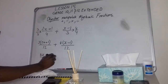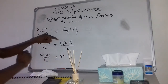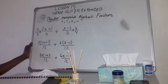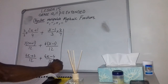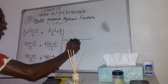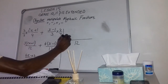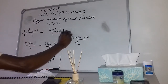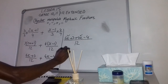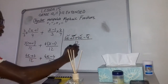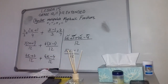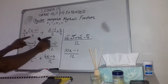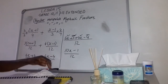So we have (6x + 3) over 12, plus 4 times x gives 4x and 4 times negative 1 gives negative 4, over 12. Concentrating on the numerators — everything is over 12 — we have 6x + 3 + 4x - 4. Combining like terms: 6x and 4x give 10x, and 3 minus 4 gives minus 1. The final answer is (10x - 1)/12.